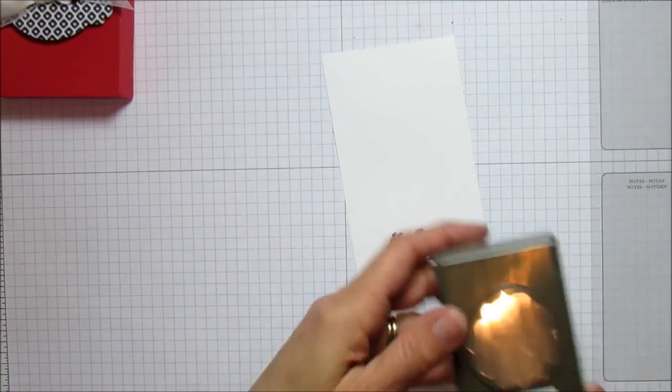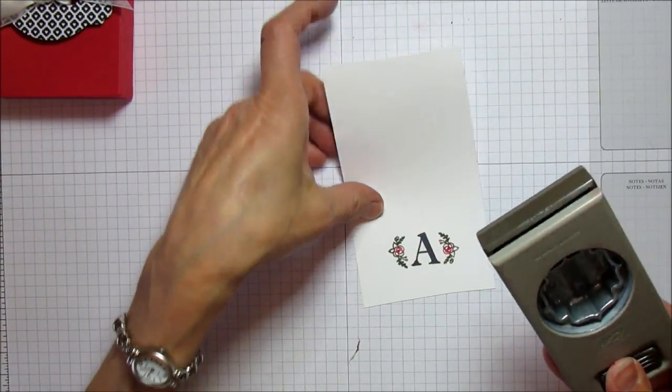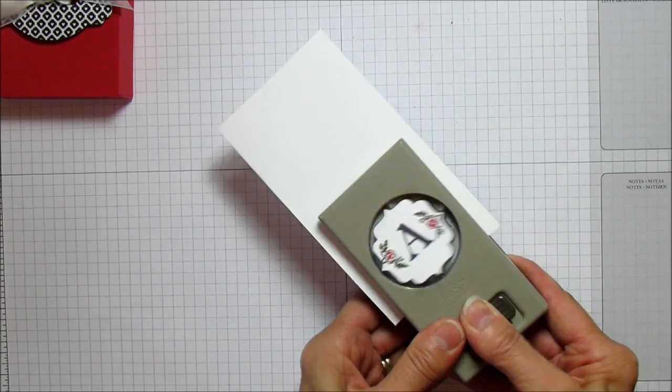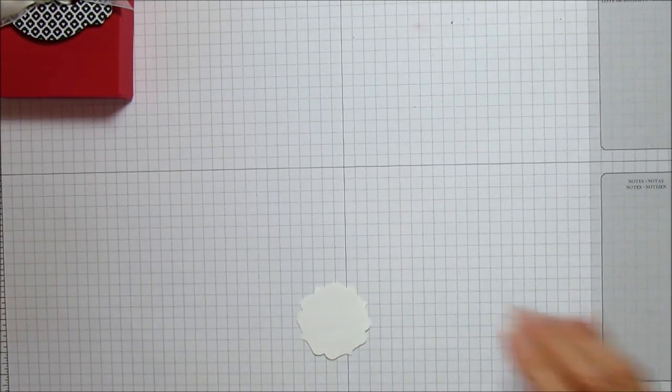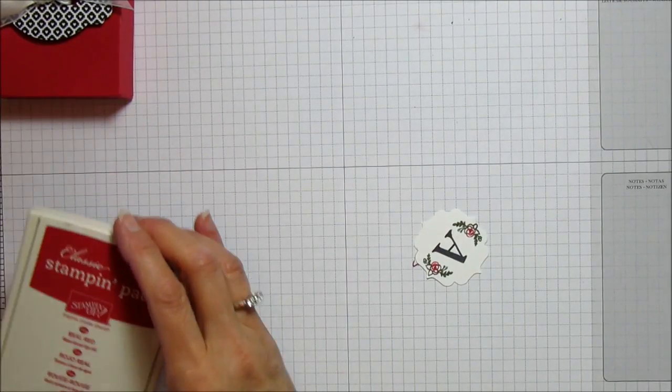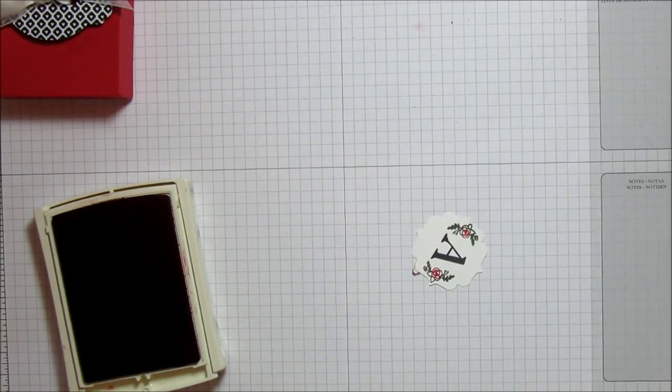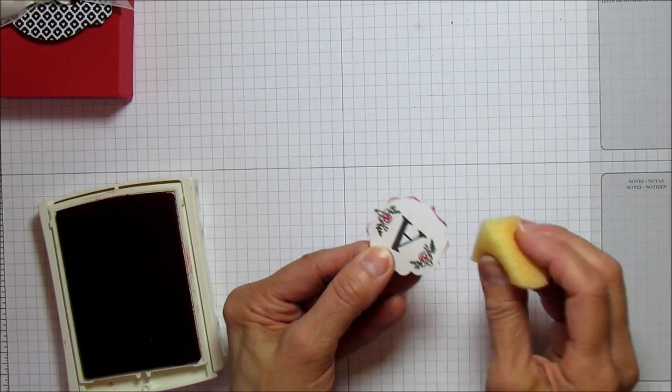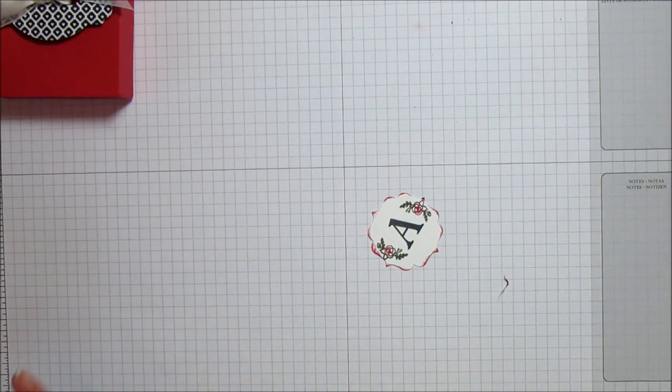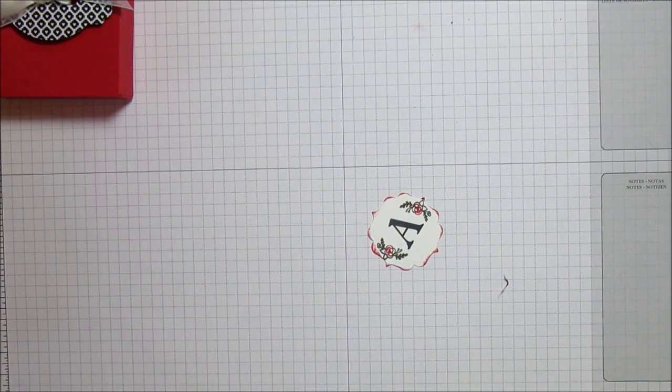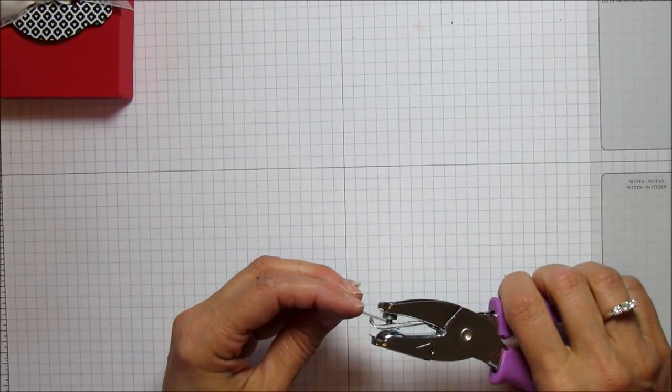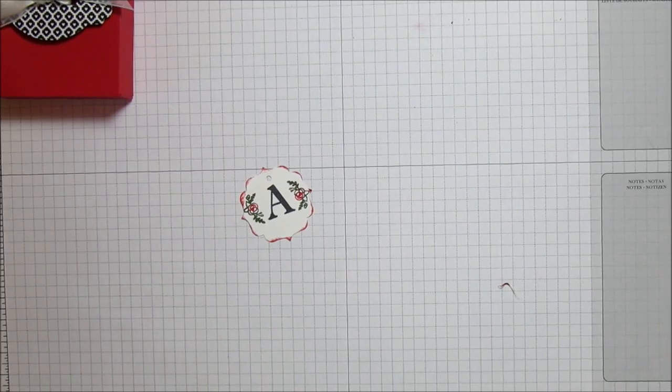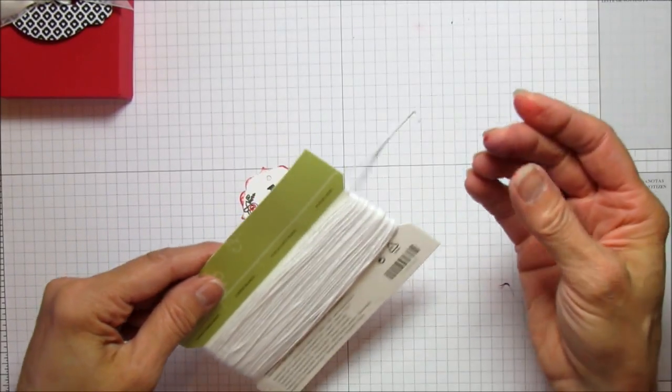So we got that done and I'm using this label bracket punch. I'm just going to punch my initial out of that. I'm going to ink up the edges with some real red - just gives it a little bit of extra. We're going to put a hole in that with our smaller punch.